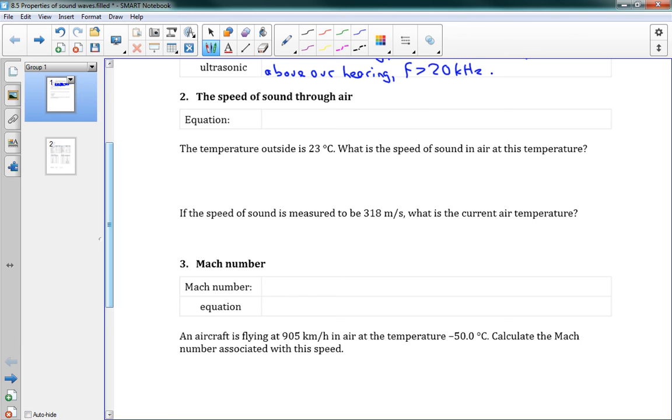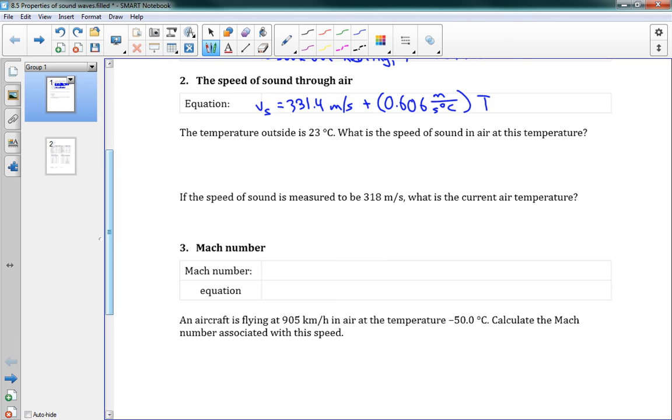The next bit here is the speed of sound through air. So sound travels at a certain speed through air. And we have an equation for this. It depends on the temperature of the air. Our equation is Vs, the speed of sound, is equal to 331.4 meters per second, plus 0.606 meters per second degree Celsius, times the temperature. And so, basically the idea is, at 0 degrees Celsius, the speed of sound is 331.4. And as we go up, you can see that our speed is going to increase, because we're adding some amount, 0.606 of the temperature. And as it gets colder than 0 degrees, the speed of sound slows down.